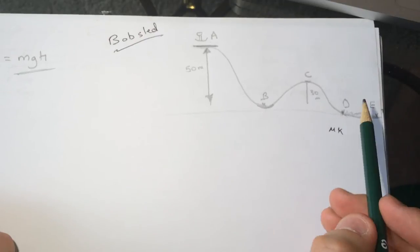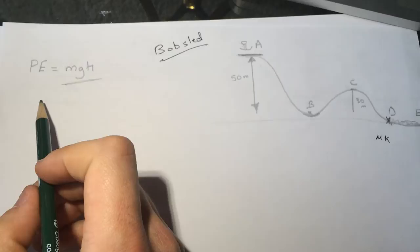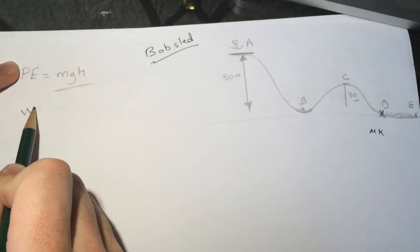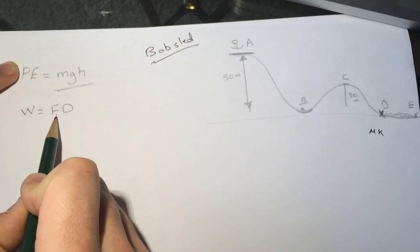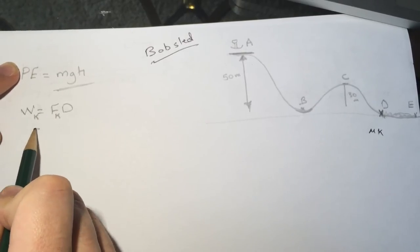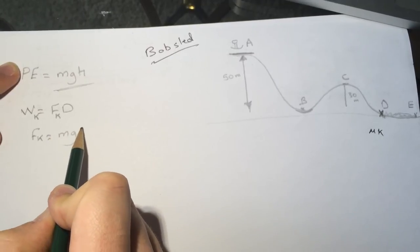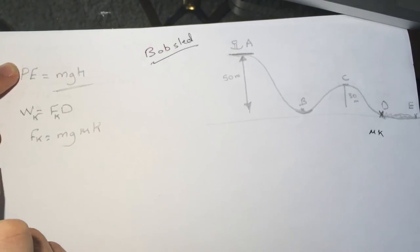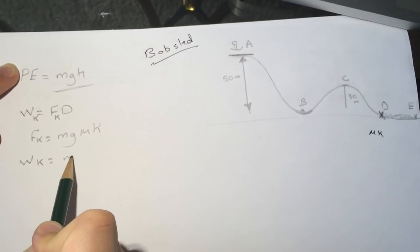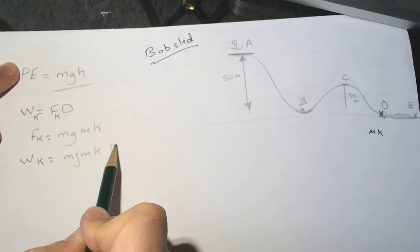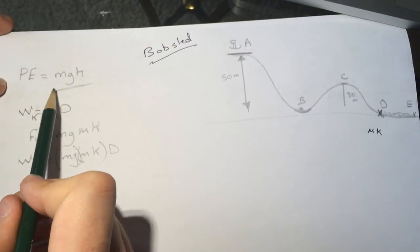All the MGH will go into the work of the friction here. What is the work of the friction? Work in general is FD, but here it's the FK. What is the FK? It's equal to MG UK. So the work of friction is equal to MG UK D.